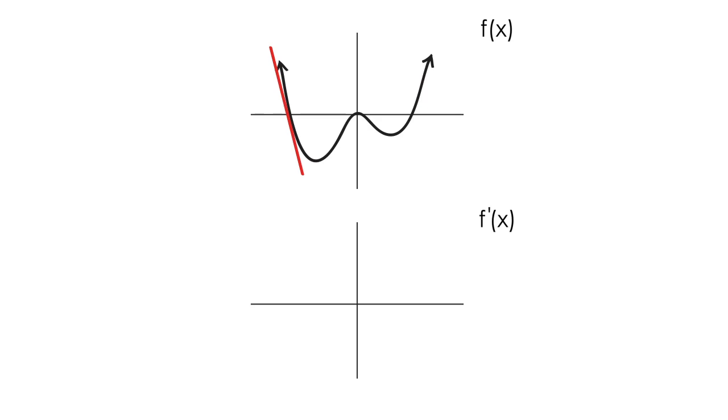We'll start by sliding our tangent line along our curve. Notice that the slope of this tangent line is becoming less steep until the point where the slope of the tangent line is equal to zero. At this point the function f has a minimum value.